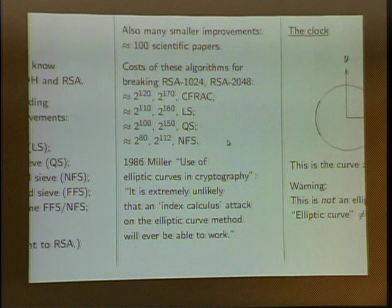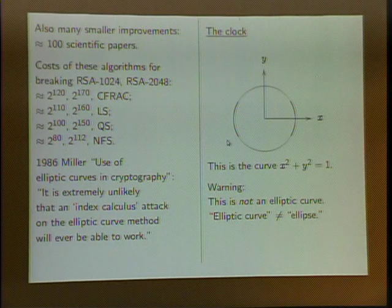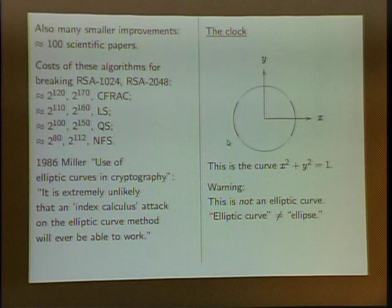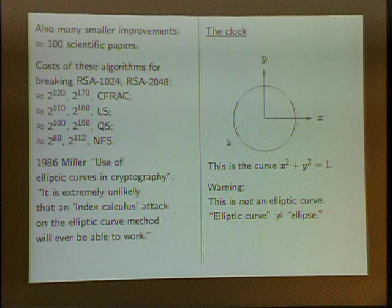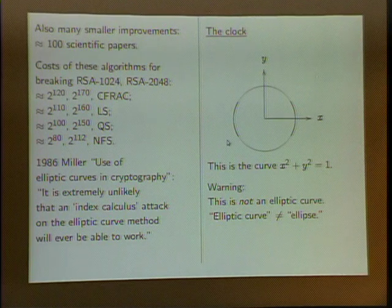To get an idea of what elliptic curve crypto looks like, we start with a warm-up using the simplest kind of curves: a circle, or clock. Mathematically this is x squared plus y squared equals 1 — all points x, y in the plane satisfying that equation. Note that circles are examples of ellipses, but elliptic curves are not ellipses — they are a little more complicated. Ellipses and circles do not have the advantages that elliptic curves have.